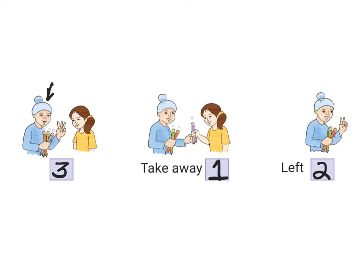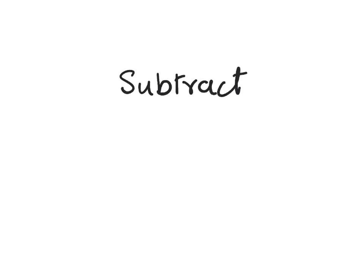And if you recap, Raja had 3 pencils. Sita took away 1 pencil, and he's left with 2 pencils. So when you subtract, you actually take away.